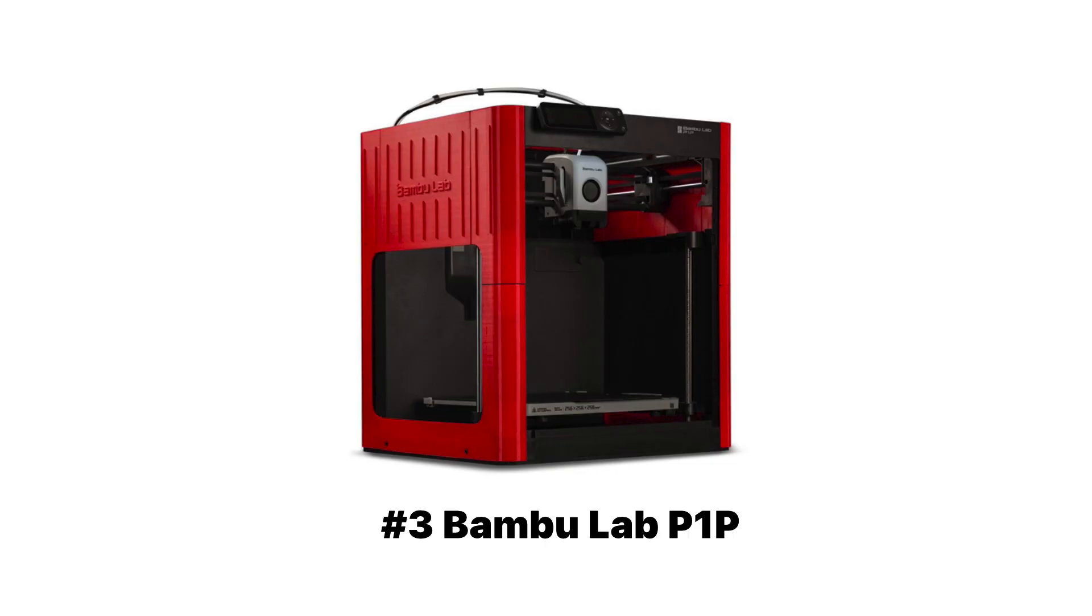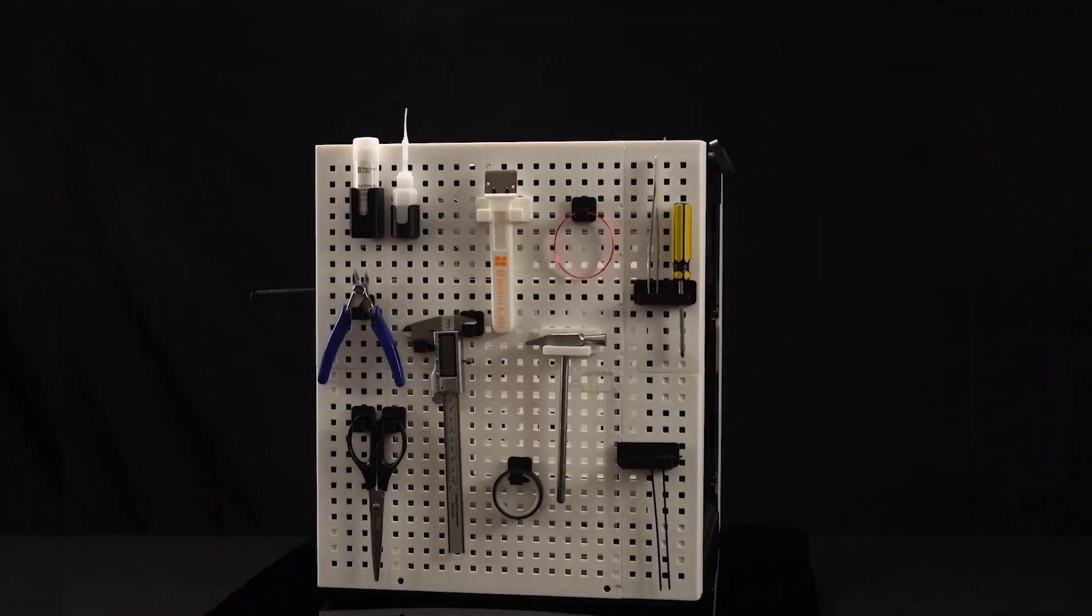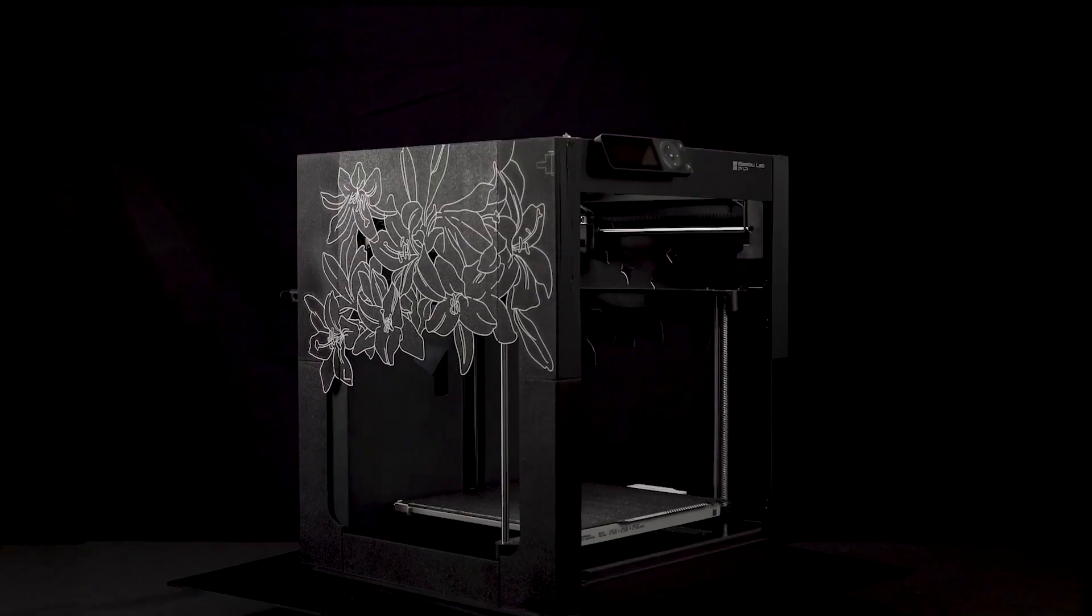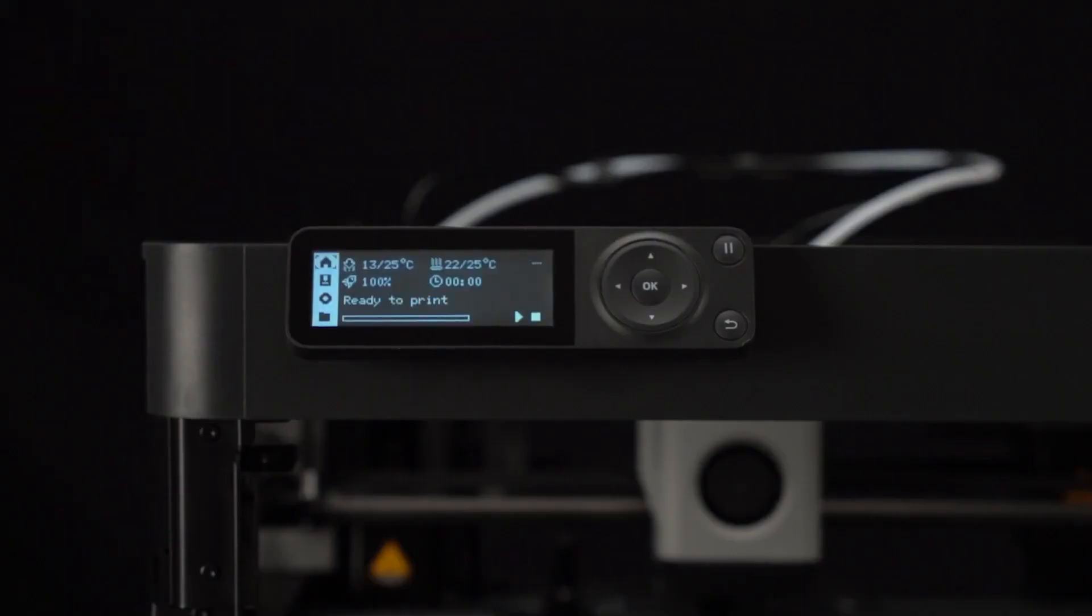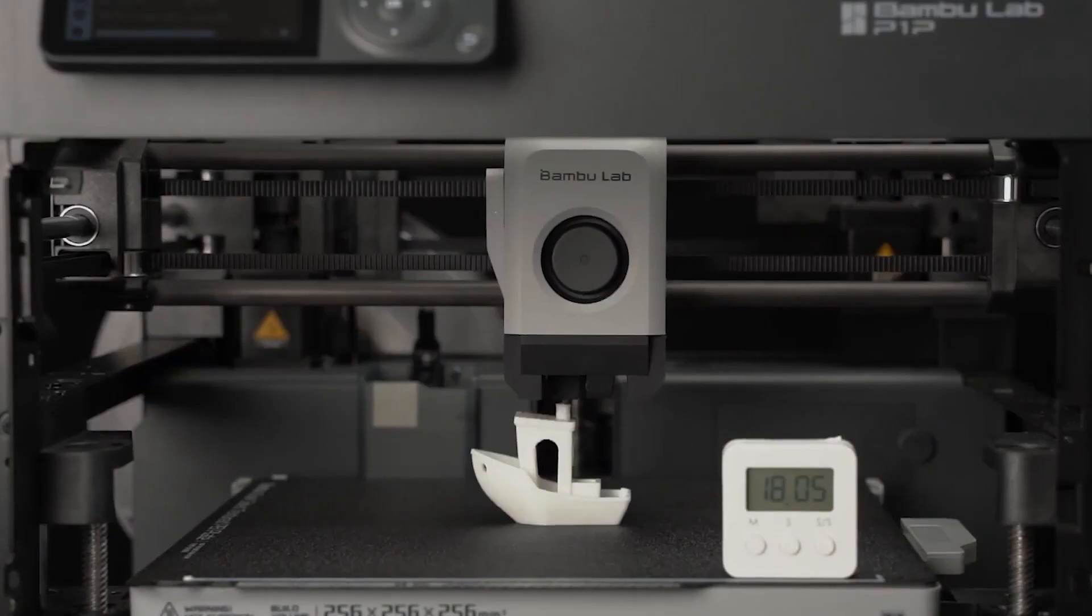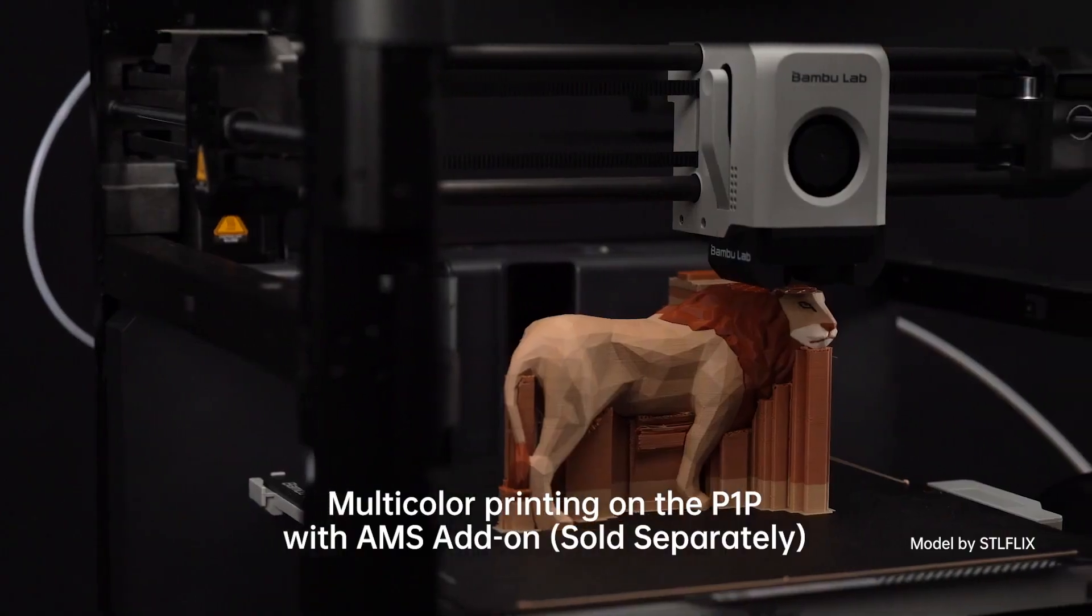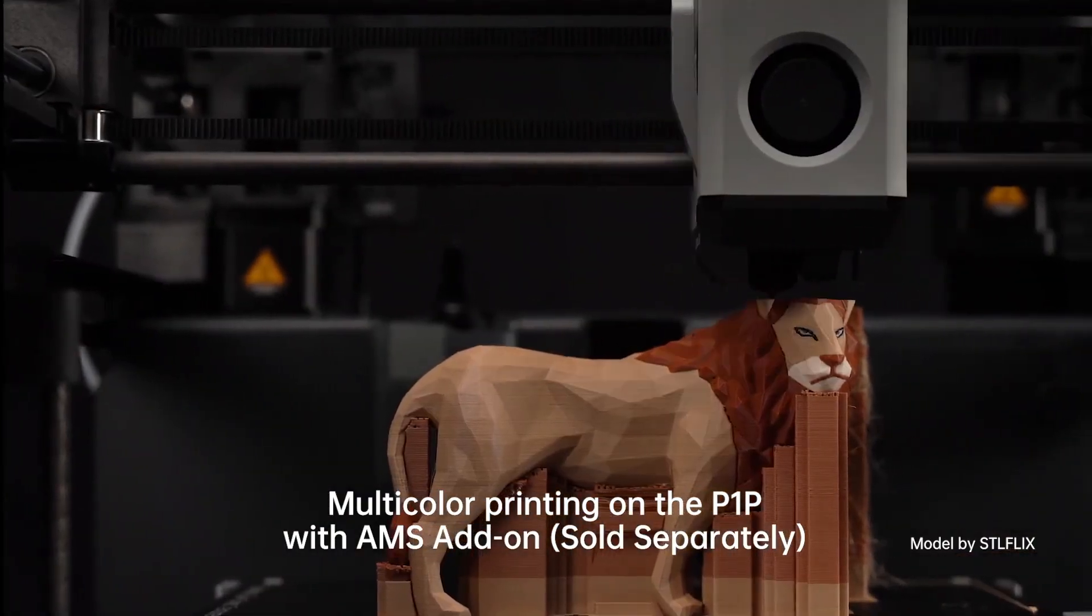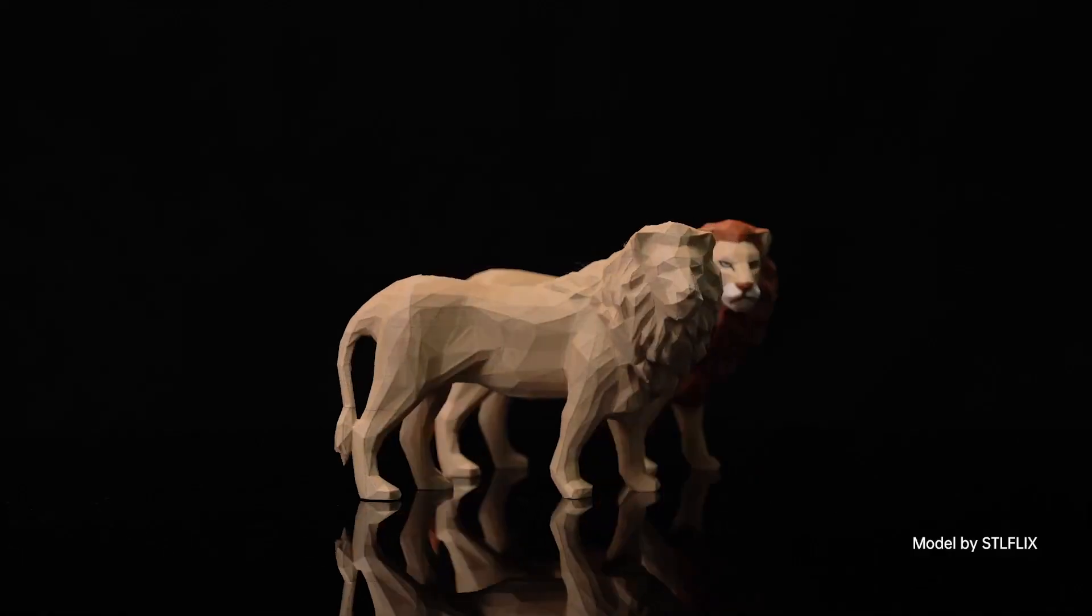This is the less expensive version of the X1 Carbon. It's essentially the same 3D printer, but all the extras are stripped away. Instead of it coming with an enclosure, you could 3D print your own. While it doesn't come with all of the features that make the Bamboo X1 Carbon really cool, you can still print extremely fast for about half the cost. So if you want a top-of-the-line advanced 3D printer, but you don't want to spend $1,500, you could spend about $700 and get the Bamboo P1P.